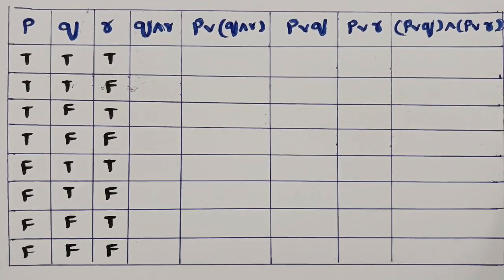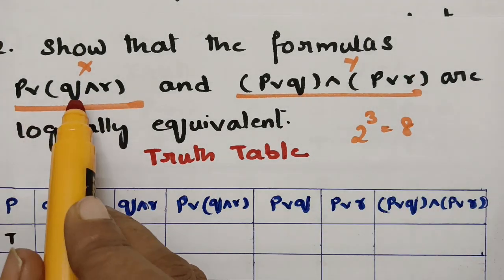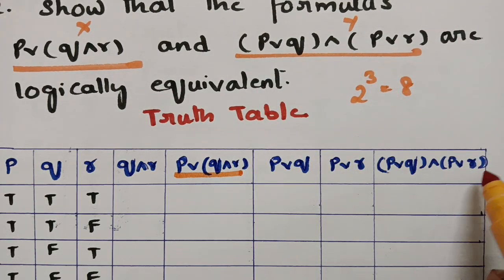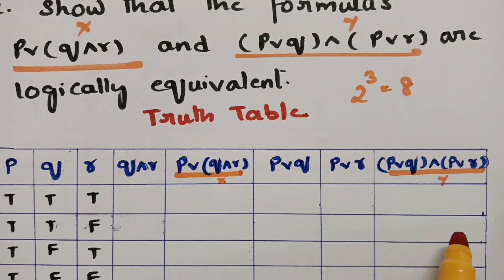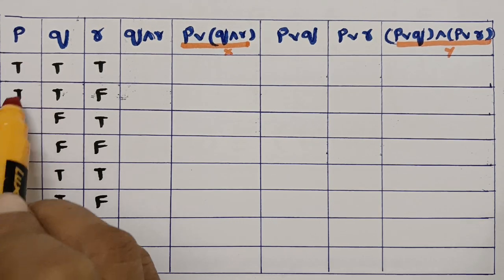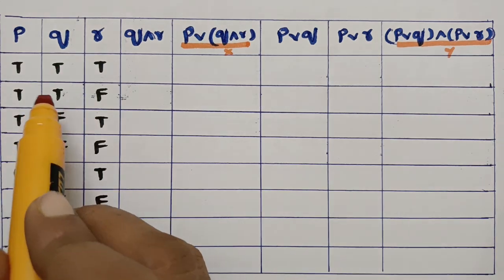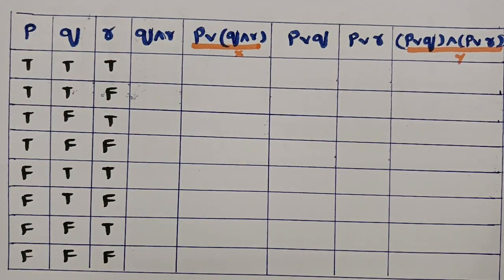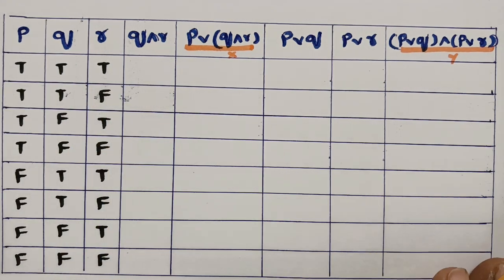We set up a truth table with eight rows. For filling in the eight input values: for p, take the first four as true and last four as false. For q, take two true, two false, two true, two false. For r, alternate single true-false values: true, false, true, false, true, false, true, false.